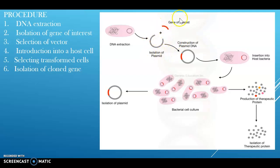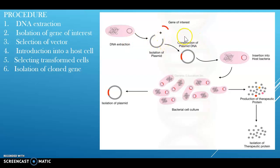After extracting the gene of interest, selection of the vector is essential for introducing it into the host cell. Vector selection is a critical process for recombinant DNA techniques, as the wrong vector cannot drive the required genes to the target locations. The vector carries the gene of interest to the host cell, replicates, and makes copies of the DNA in the host cell.